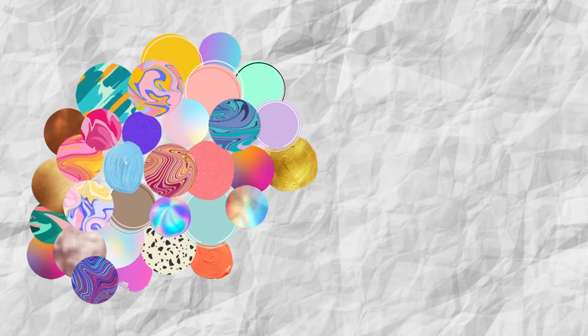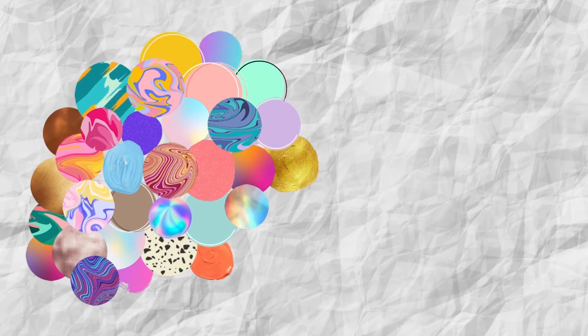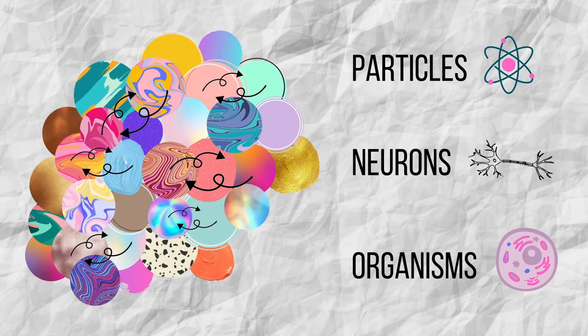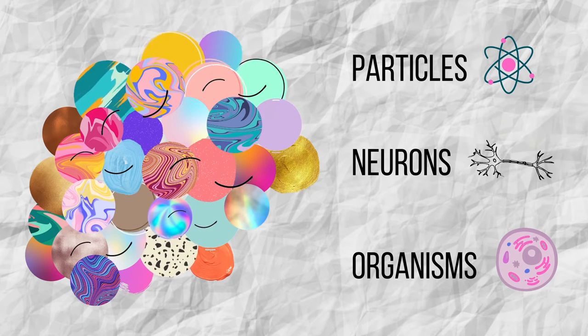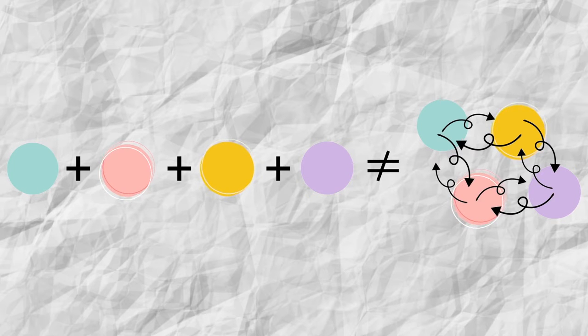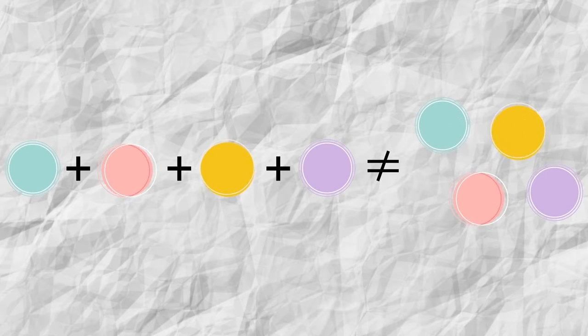But what is a complex system? In short, it's a system made up of a bunch of components—particles, neurons, organisms—that interact with each other. As a result of these interactions, the overall behavior of the system cannot be deduced from the individual behaviors of its components.